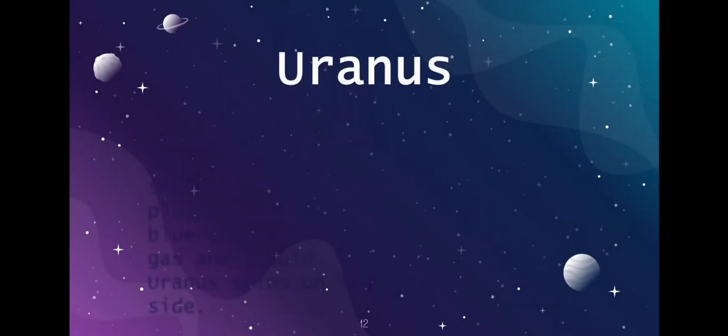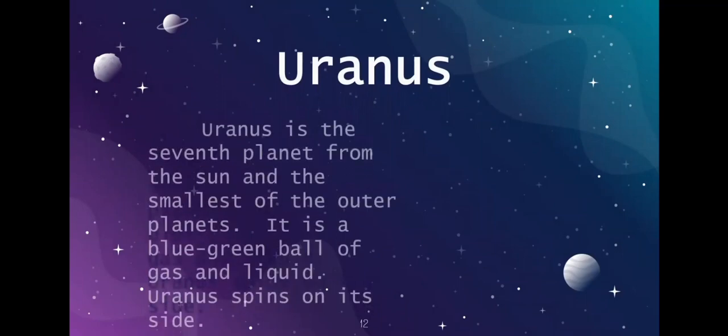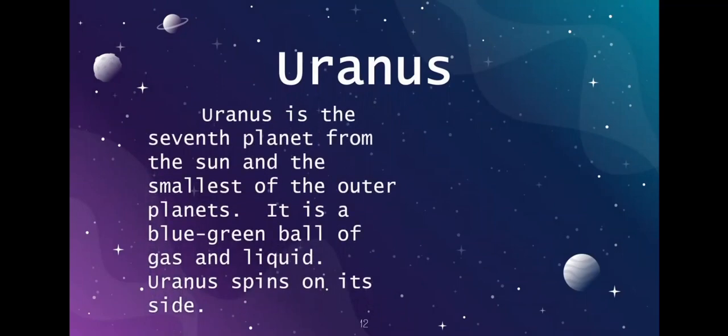Next up is Uranus. Uranus is the seventh planet from the sun and the smallest of the outer planets. It is a blue-green ball of gas and liquid, and Uranus spins on its side.